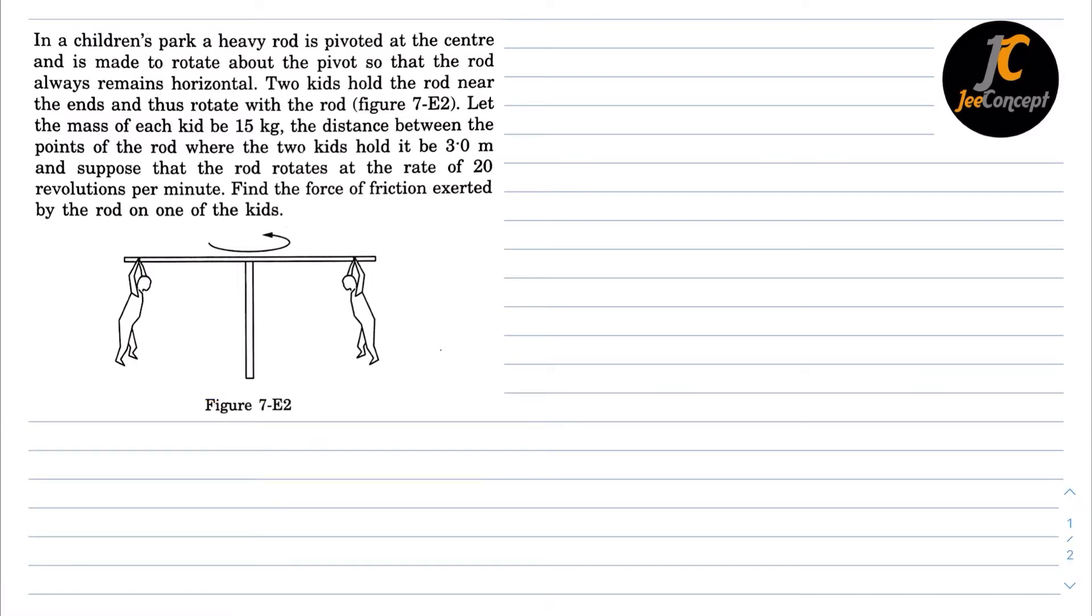This question is quite simple. When this rod rotates with the speed of omega, the kid will experience a force which is equal to centrifugal force, that is m r omega square. The same friction will be applied by the rod on this kid.